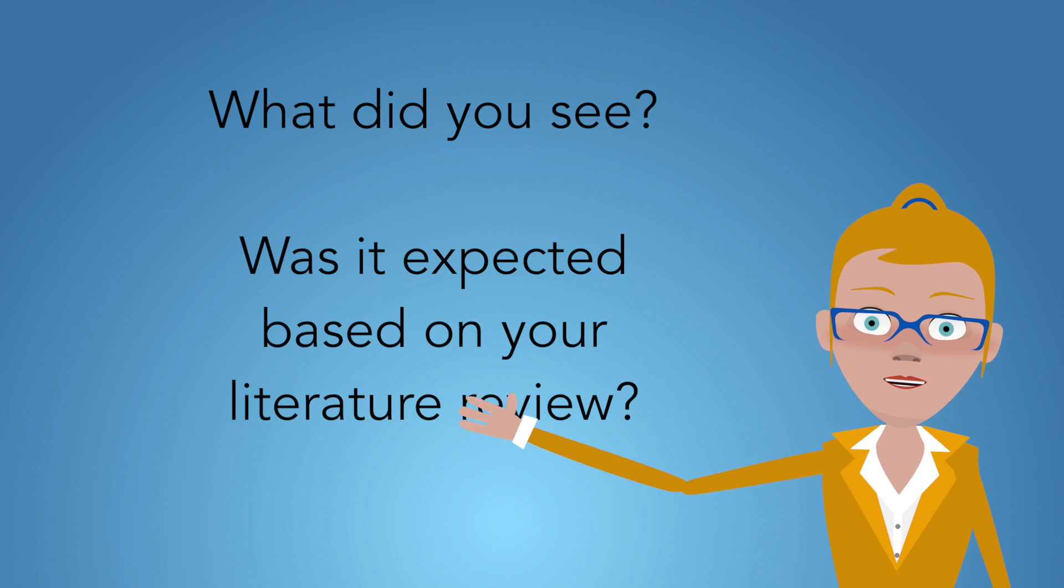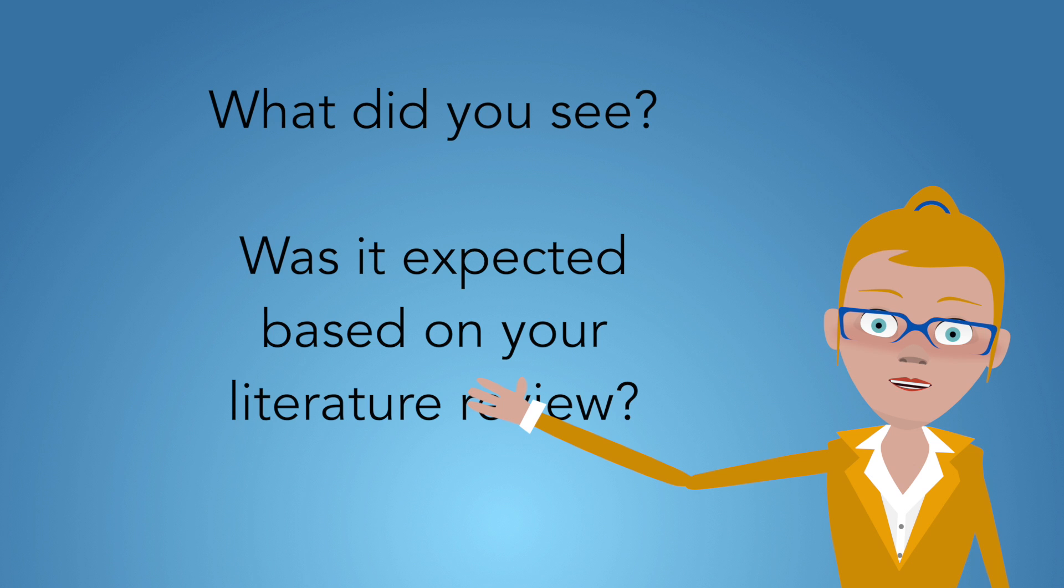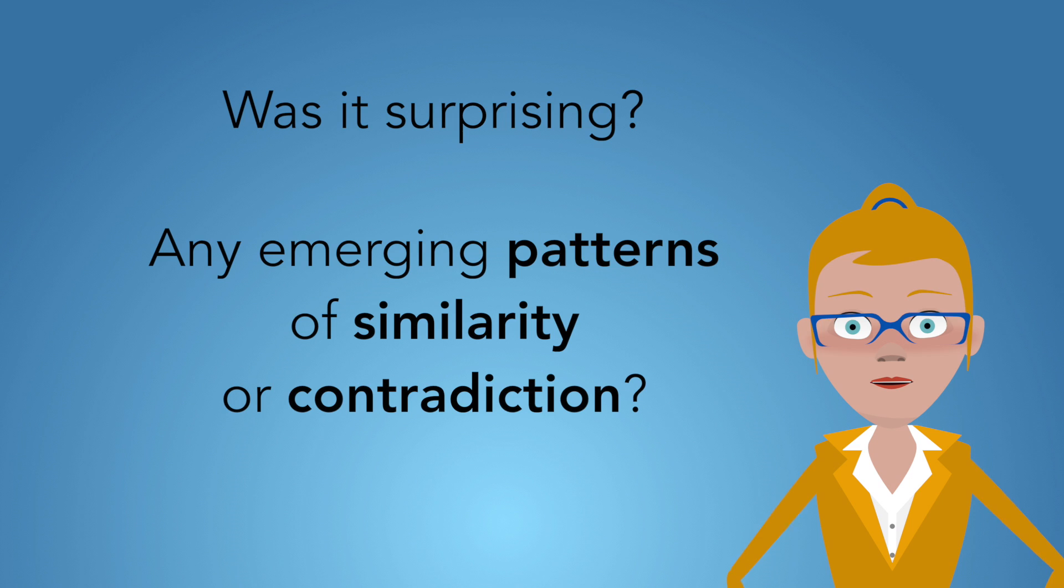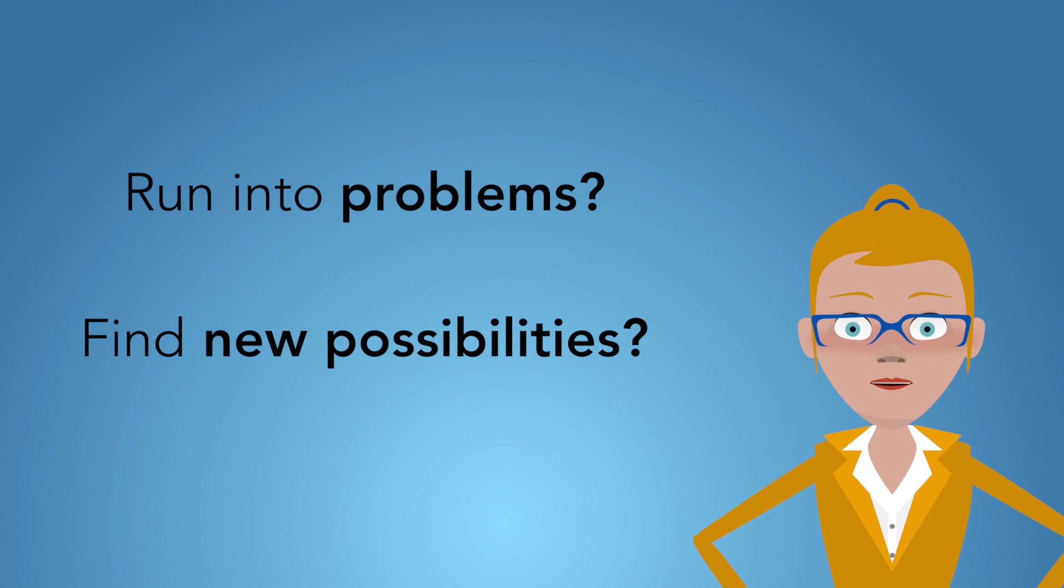Did I notice something that I expected to see, that I expected to learn based on my literature review? Or did I learn something totally new? What patterns are emerging that I'm noticing when I'm coding? What contradictions are emerging that I'm noticing as I'm coding? And what possibilities or problems am I encountering as I'm doing this?